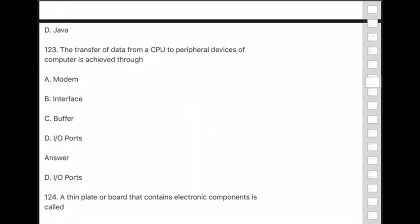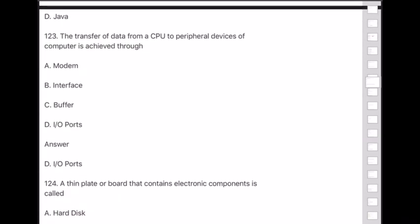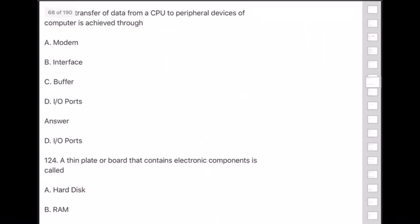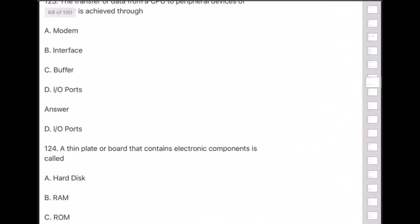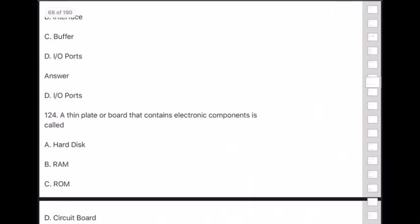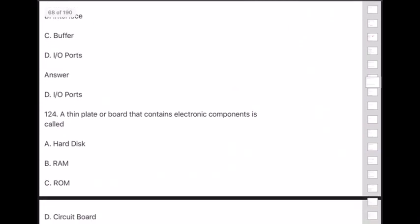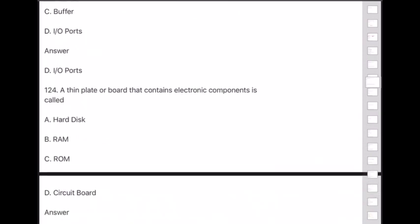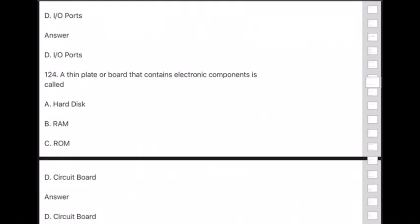Question 124: A thin plate or board that contains electronic components is called — answer is option D — circuit board.